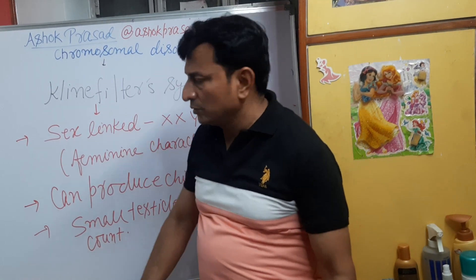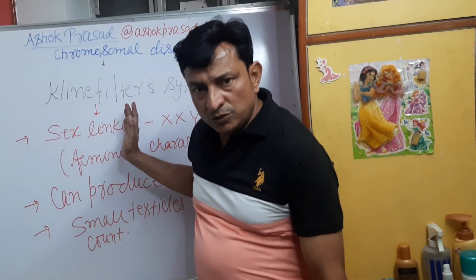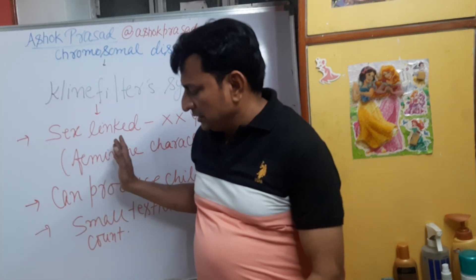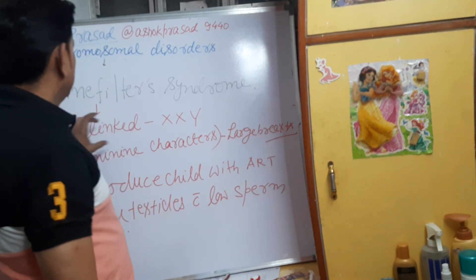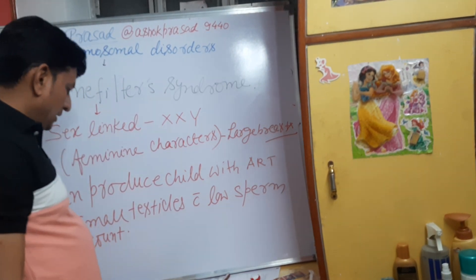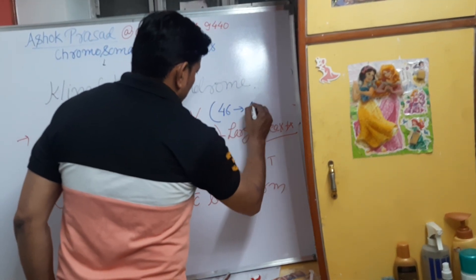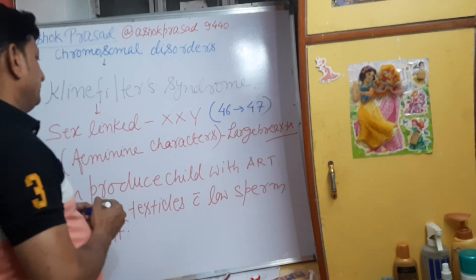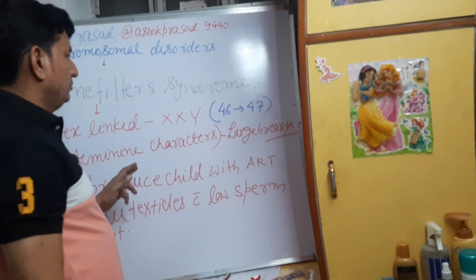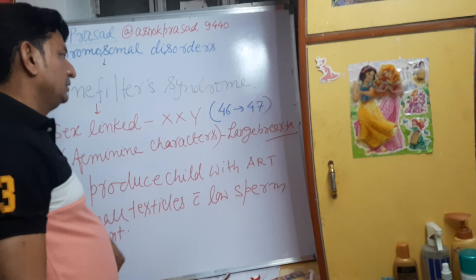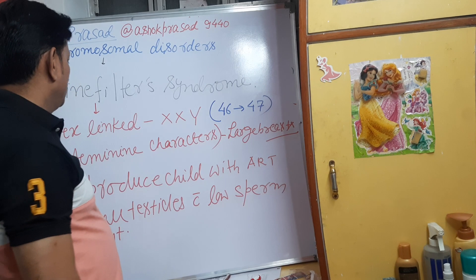In chromosome disorders, I am going to talk about Klinefelter syndrome. This is a sex-linked disease. The number of chromosomes instead of 46 happens to be 47. Turner syndrome has less than 46 — that is 45 — and Down syndrome has 47, and Super Female has the same.